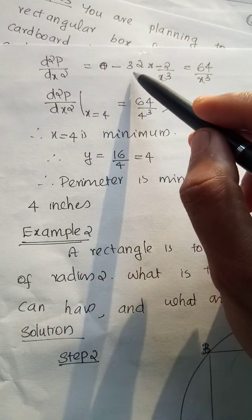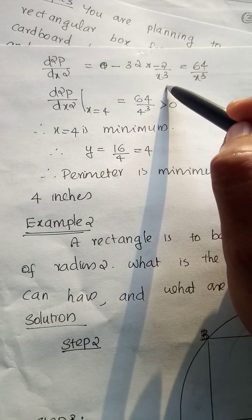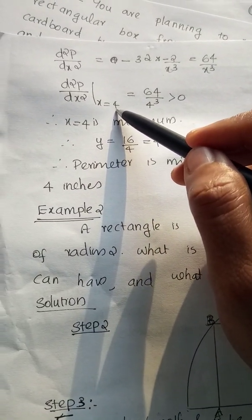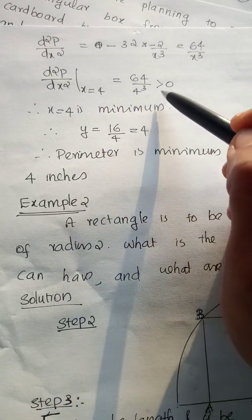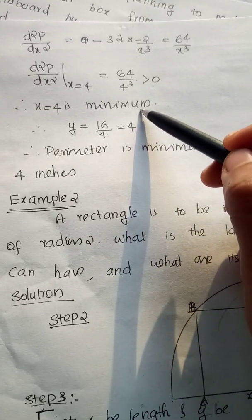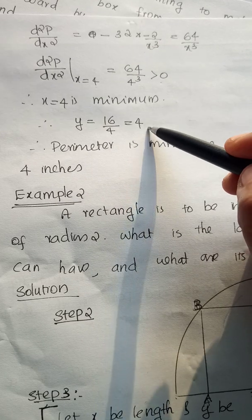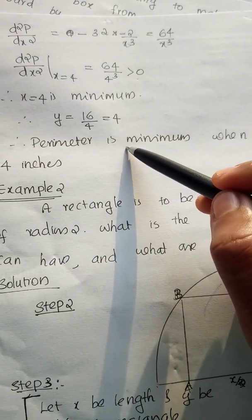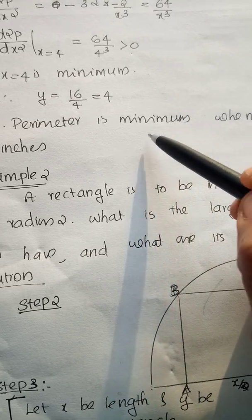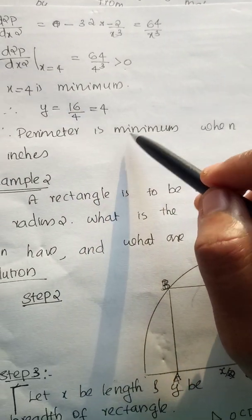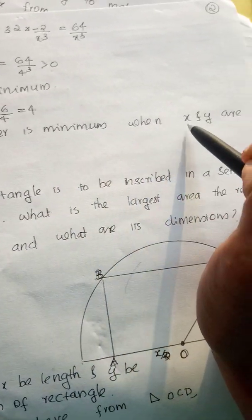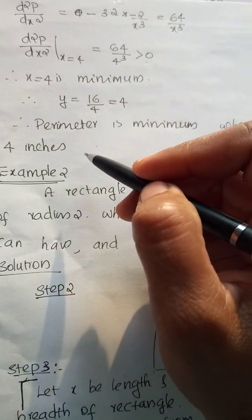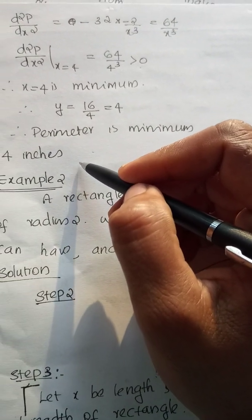The second derivative is 64 over x cubed. At x equals 4, the second derivative is positive, confirming a minimum. Then y equals 16 over x equals 16 over 4 equals 4. So the minimum perimeter occurs when both x and y are 4 inches. The minimum perimeter is 2 times (4 plus 4) equals 2 times 8 equals 16 inches.